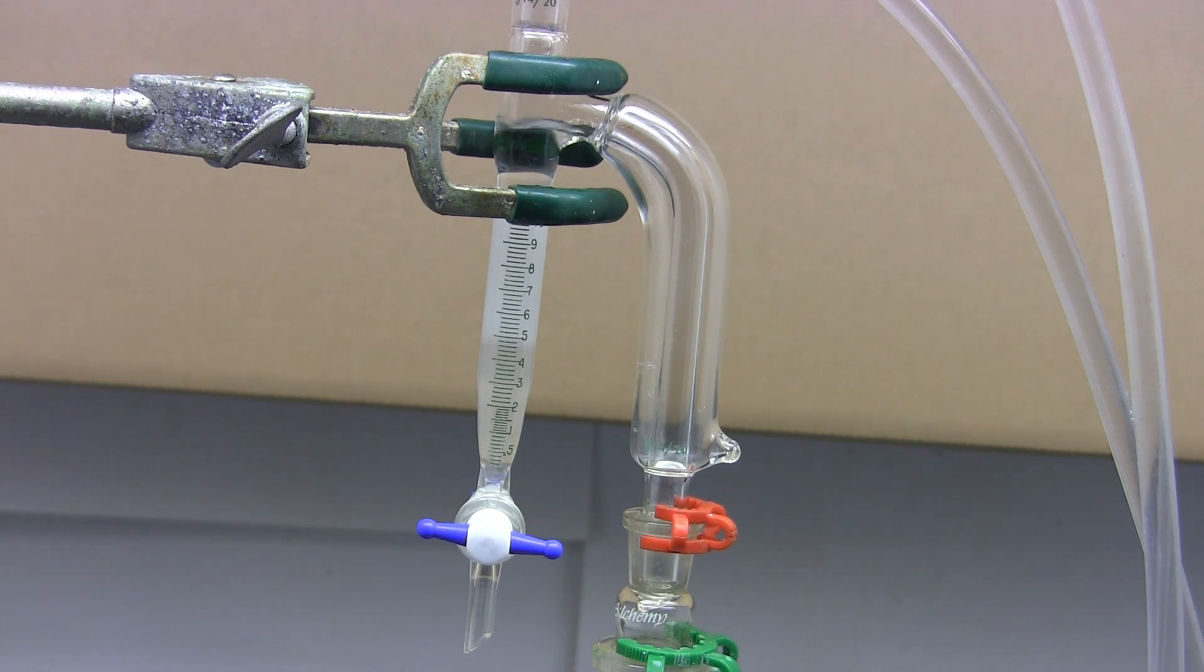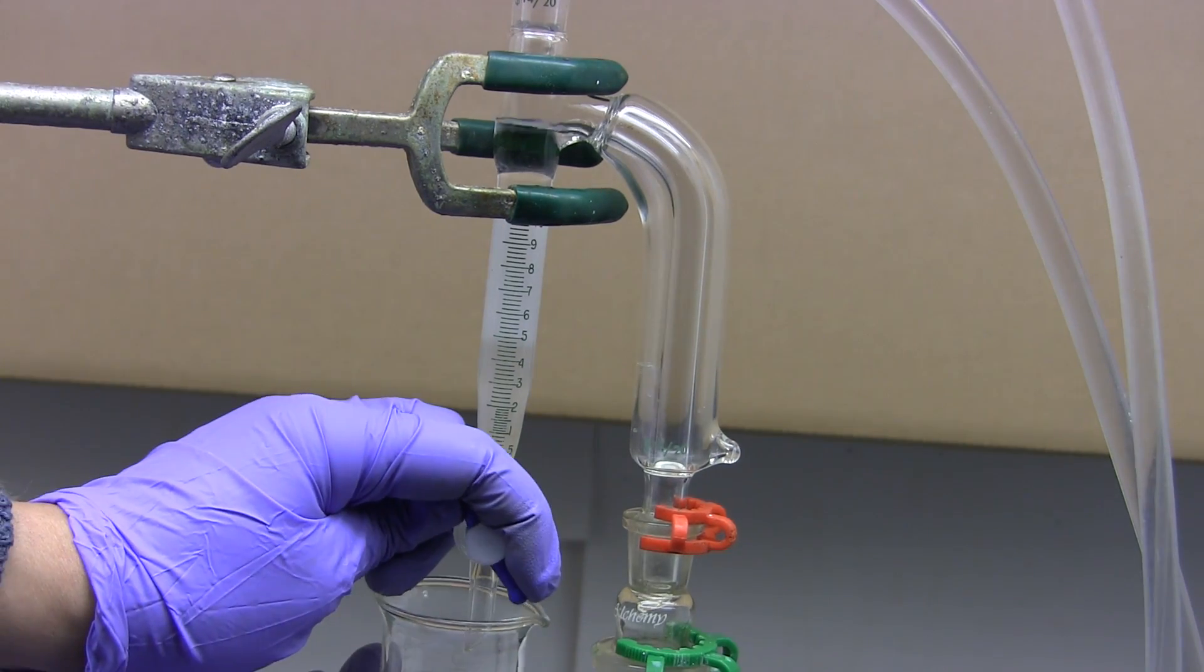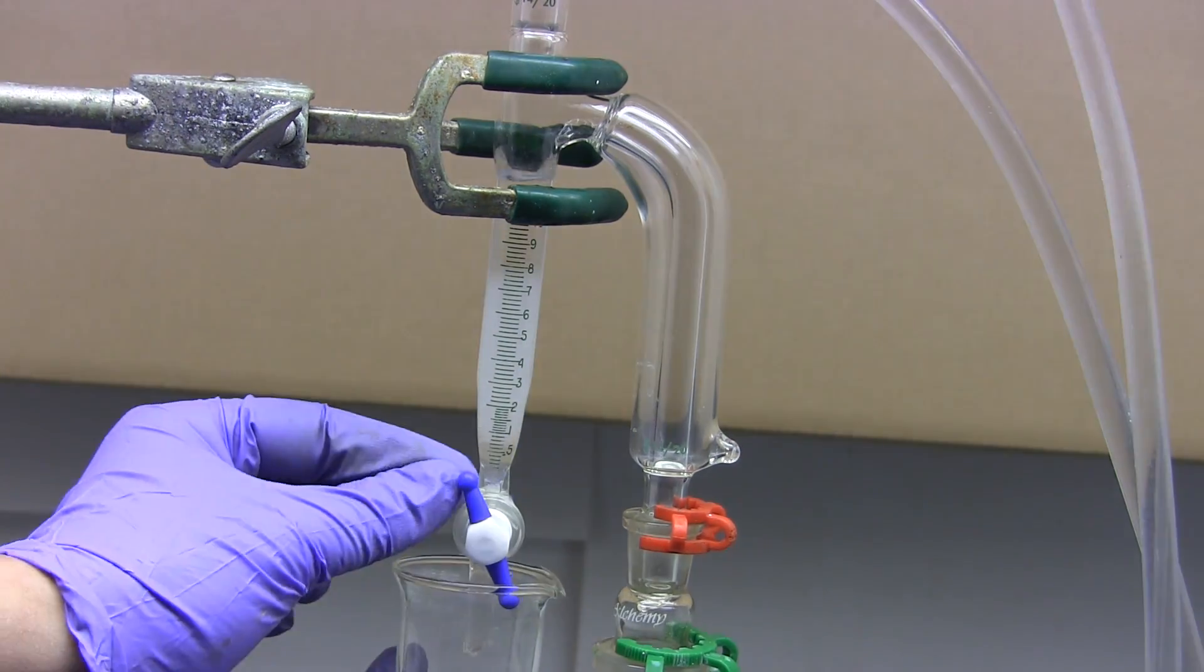If you're doing analytical work like Dean and Stark were, then you can just read off the amount collected on the graduations. Alternatively you can remove the water from the trap by using it like a separatory funnel. And there we go.